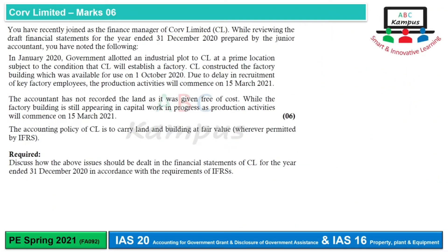Welcome to ABC Campus. Today we are going to do a past exam — Spring 2021. We are going to discuss the knowledge of IAS 20 and IAS 16. The title is Corv Limited, and six marks are part of this question.